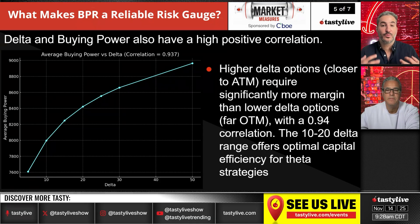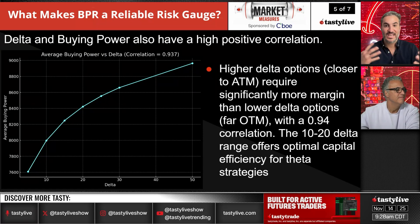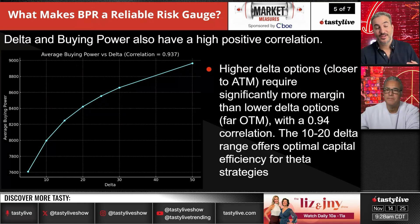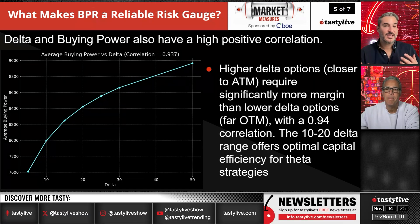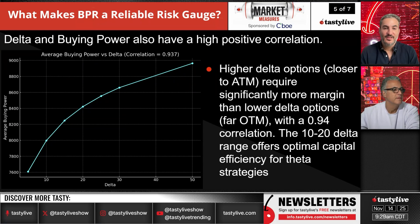The 10-to-20 delta range is typically where we trade — it's sort of the optimal risk-reward. We've done thousands of studies, and between 30-delta and one standard deviation is our sweet spot: you get directional exposure, exposure to volatility, and risk is relatively in line. As you go further out of the money, buying power decreases, but your actual reward decreases too while you still keep the same tail risk. You have to determine your own risk tolerance — this is just a look at how the buying power curve looks across delta.